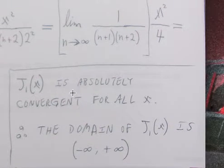So J sub 1 has been shown to be absolutely convergent for all values of x and it works for all real values of x. So the domain of J sub 1 of x is negative infinity to positive infinity. And that's it. This is Pentagram Prime signing off.